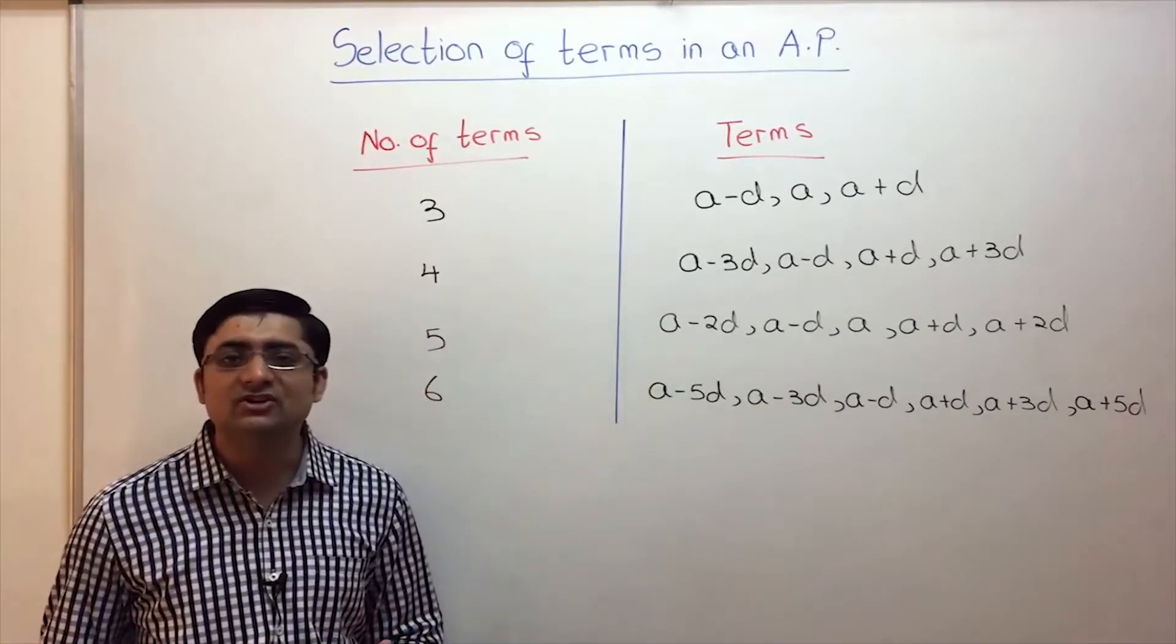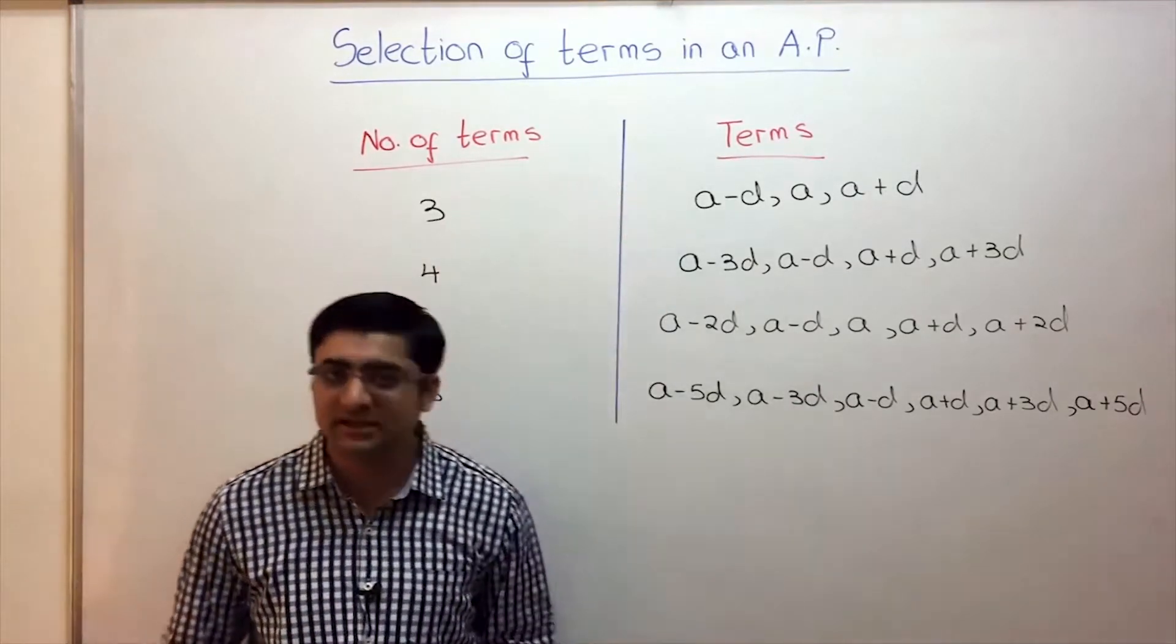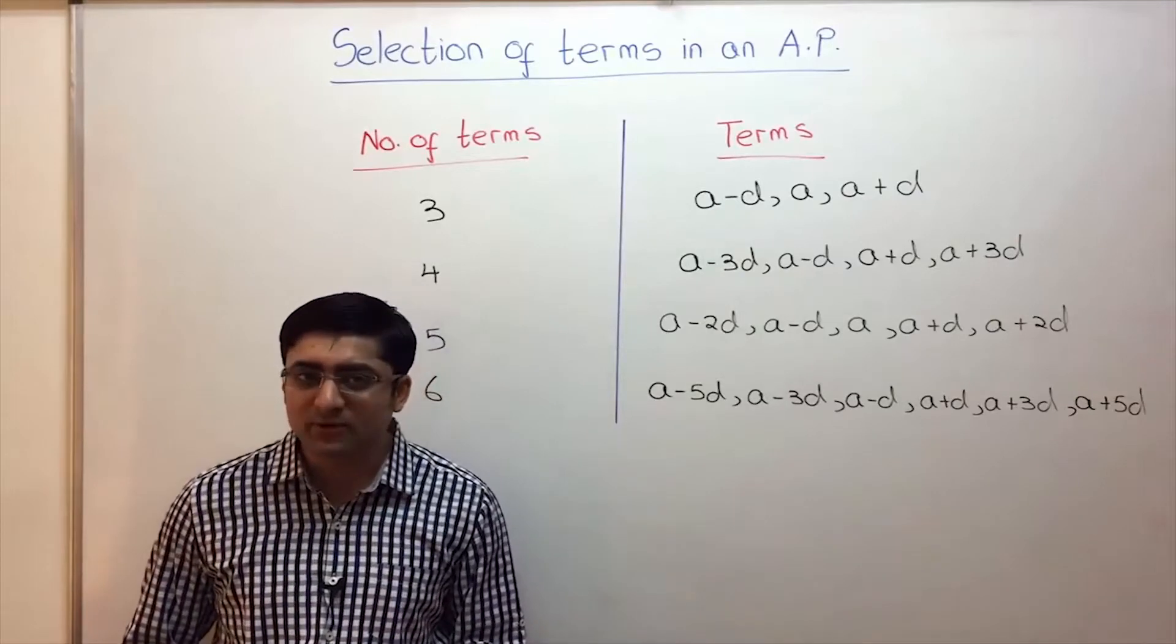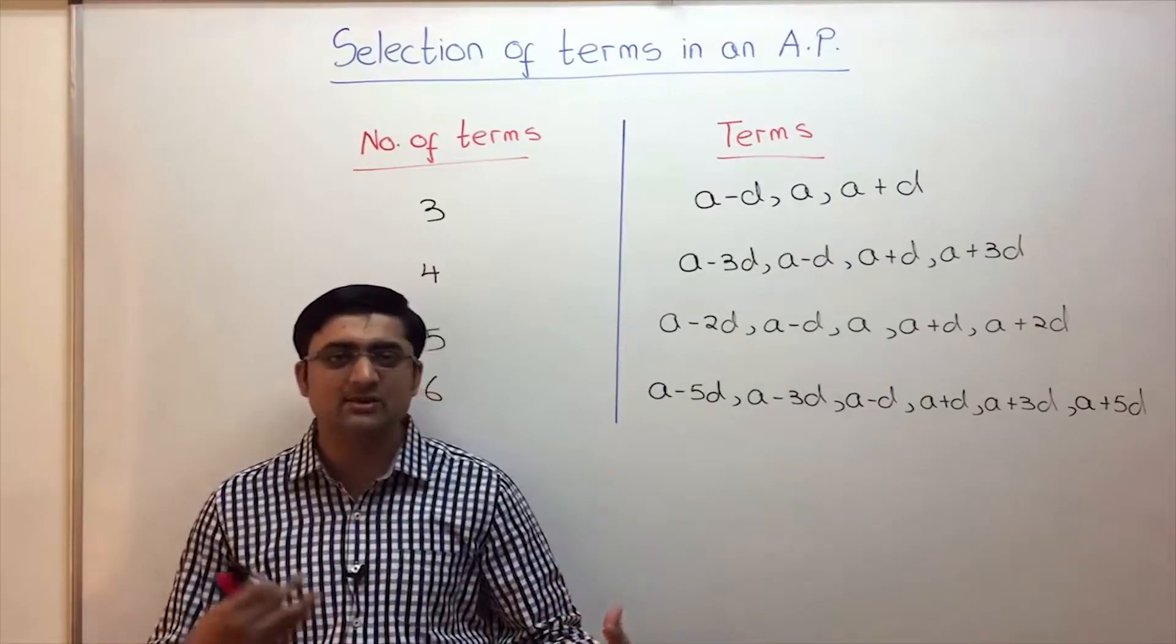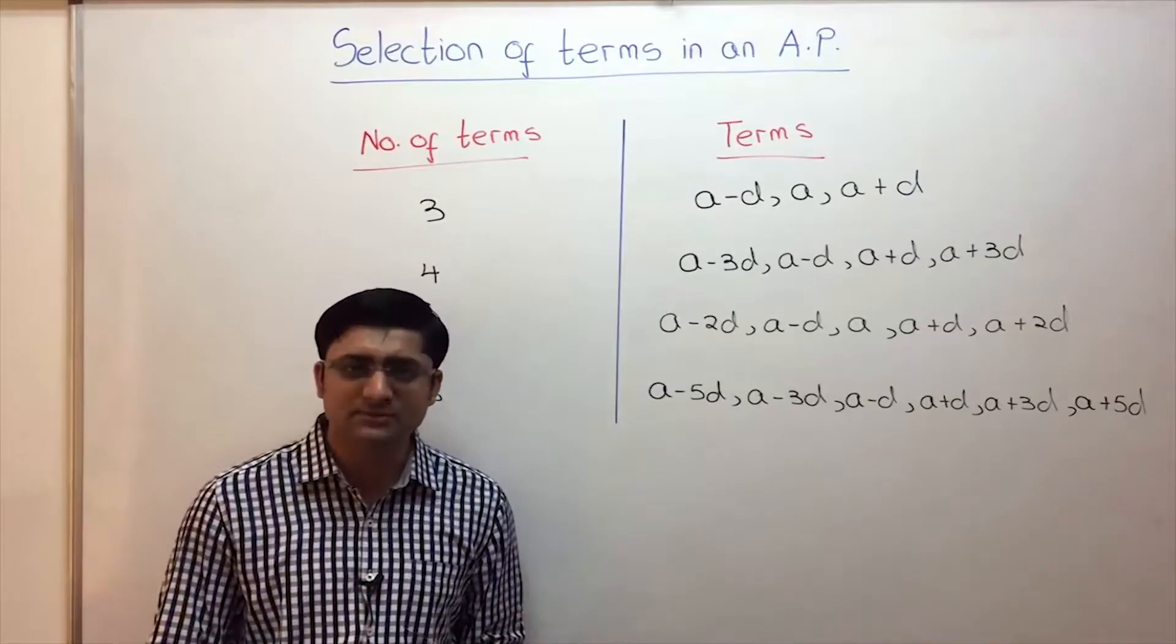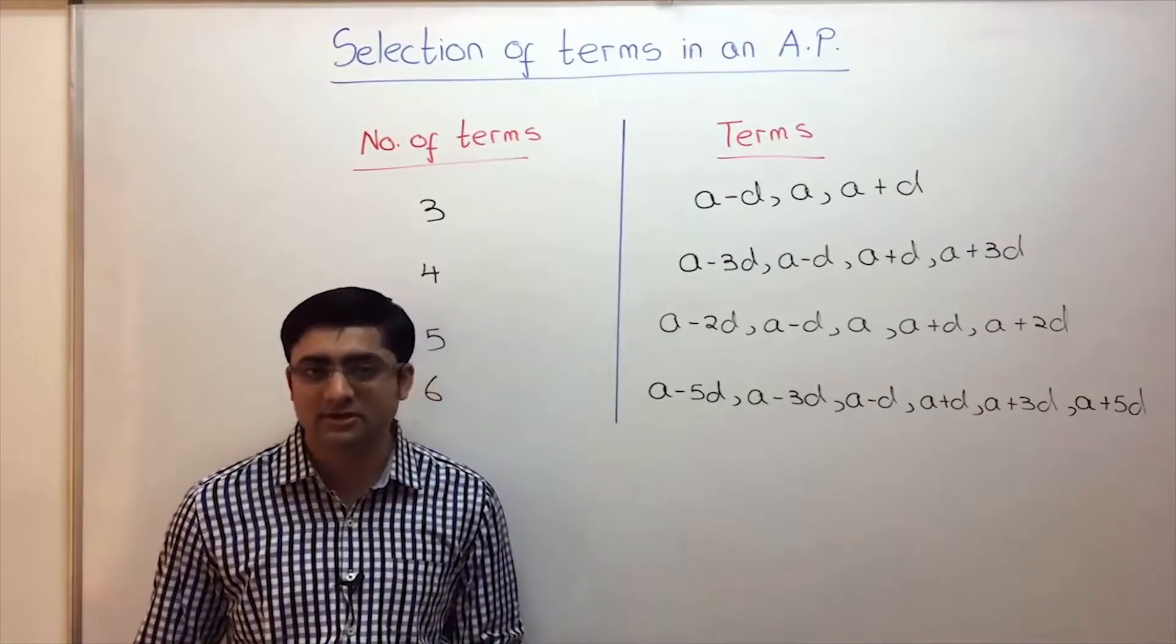In this video we are going to learn the concept of selection of terms in an AP. Often you might come across a problem where it might be find three terms in an AP whose sum is this and whose product is this, or find four terms in an AP whose sum is this and product is this.